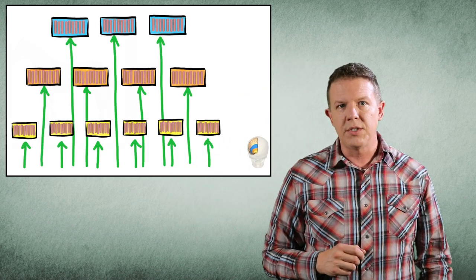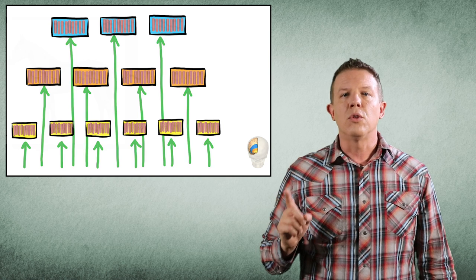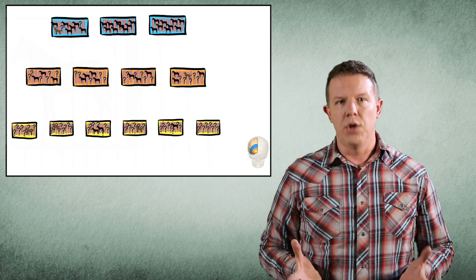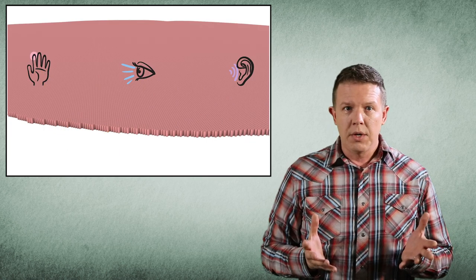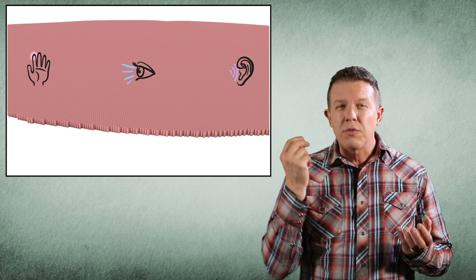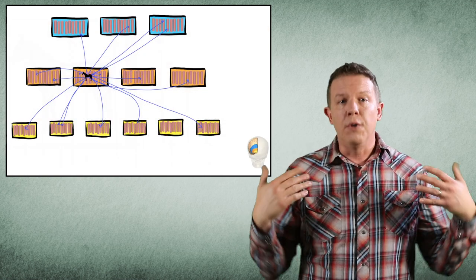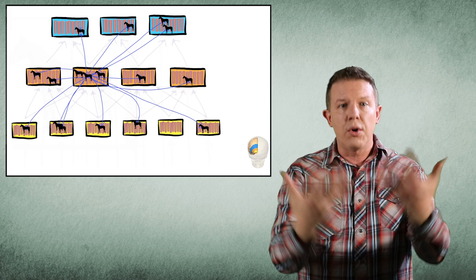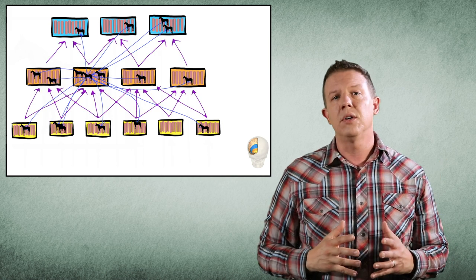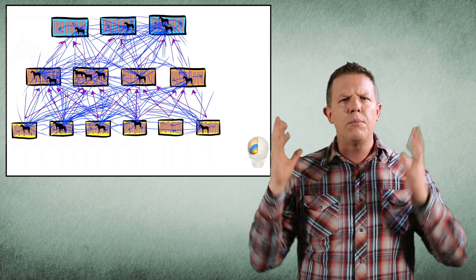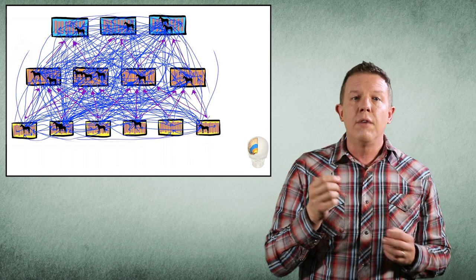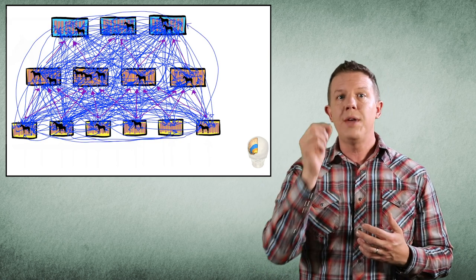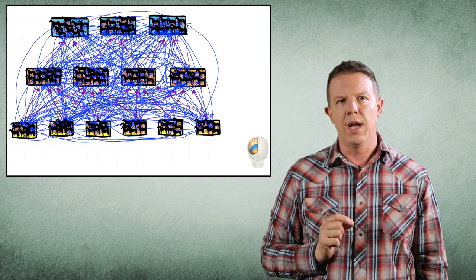In summary, the thousand brains theory of intelligence says that each cortical column learns models of complete objects. There are many models: models for vision, models for touch. Cortical columns vote within regions and across the brain to reach a group consensus on object representations. Of all the models in our brains, we are only aware of the consensus model, which is why we have a singular perception of reality.